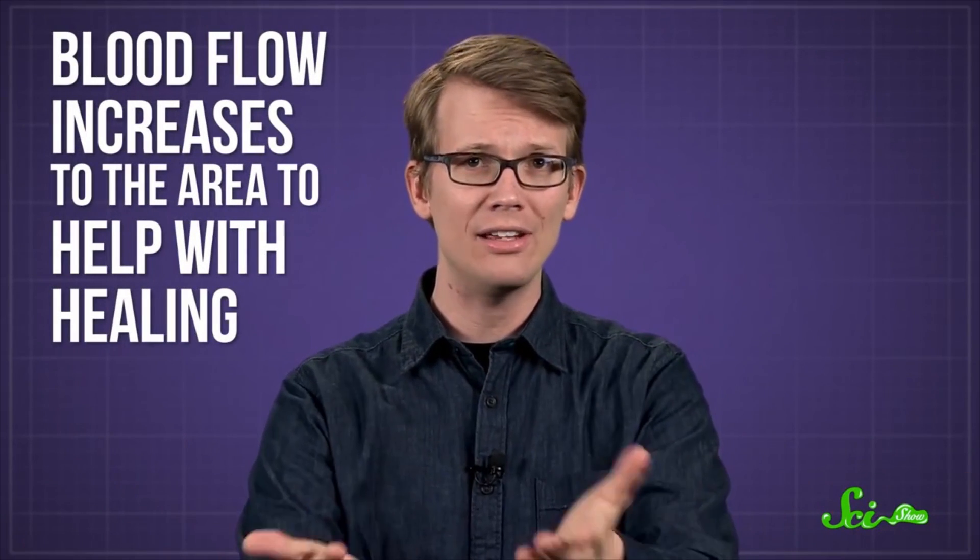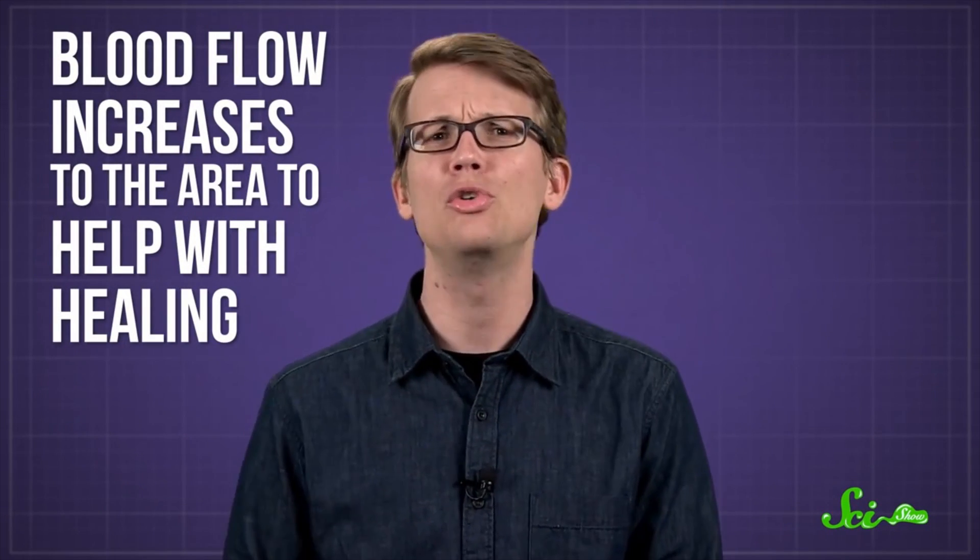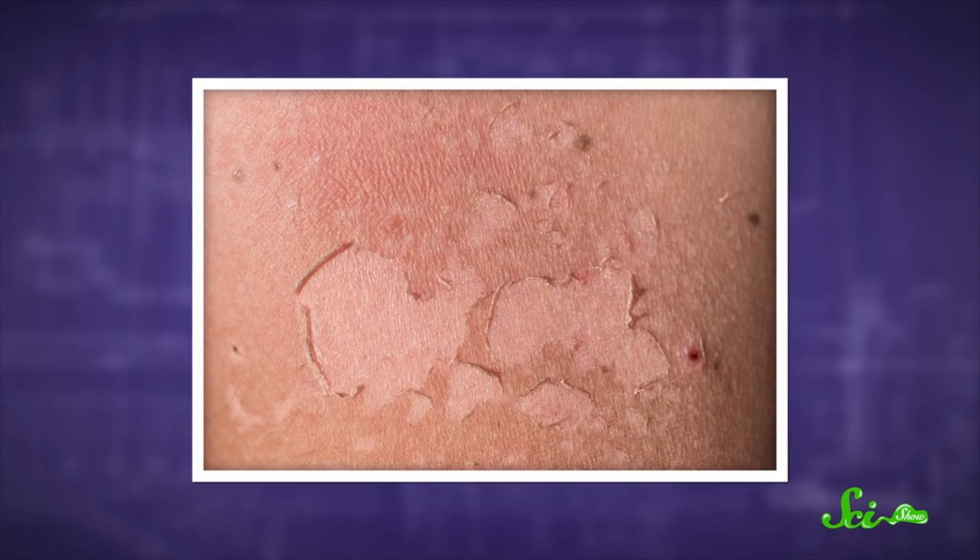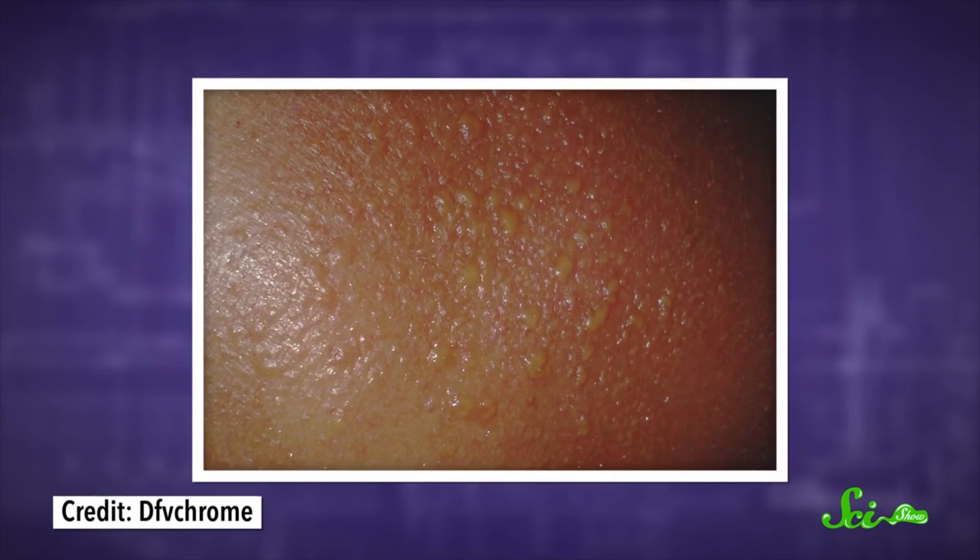Blood flow increases to the area to help with healing, which is why sunburns are usually red and warm, and after a while, all those dead cells can start to peel away. Get enough exposure and so much of your tissue will destroy itself that you might even end up with blisters, like in a second degree burn. Sunscreen helps because it contains substances like benzophenone, which absorb or even reflect UV radiation, so your trip to the beach doesn't have to involve sacrificing skin cells or increasing your risk of cancer.